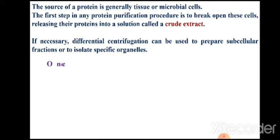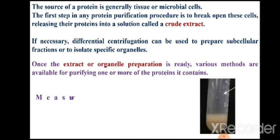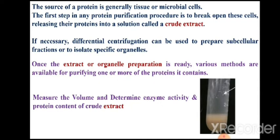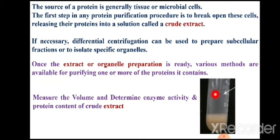So in our case, this supernatant is the crude extract. The very first thing is to measure the volume of this fraction — it may be 10 ml, 20 ml, 30 ml, 100 ml, or 1000 ml. Next, you need to assay the amylase activity from this supernatant, as well as determine the protein content of the supernatant. So these three things must be measured: measure the volume, determine the amylase activity, and determine the protein content.